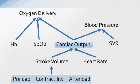Oxygen delivery is made up of many different components. As the diagram illustrates, starting at the bottom, we have what makes up our cardiac output: stroke volume and heart rate. Stroke volume times heart rate equals cardiac output. What makes up stroke volume is preload, contractility, and afterload. We need to optimize those things to have adequate stroke volume, and heart rate that's too fast or too slow will affect our cardiac output.